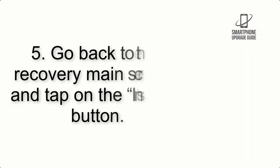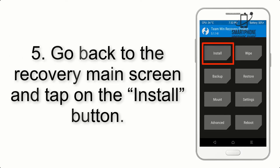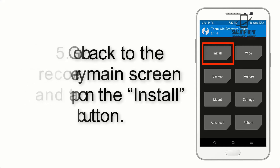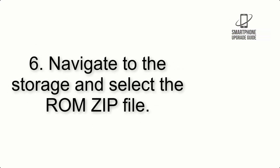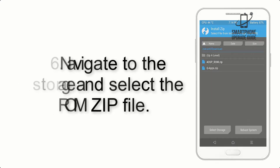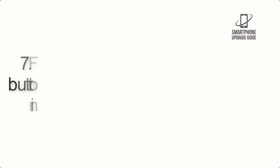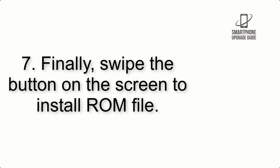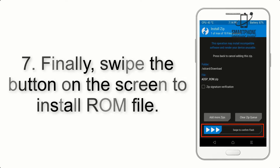Step 4: Swipe the button to wipe the device. Step 5: Go back to the recovery main screen and tap on the Install button. Step 6: Navigate to the storage and select the ROM zip file.